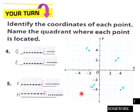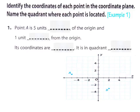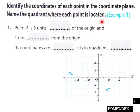Page one of your homework: identify the coordinates of each point and name the quadrant where each point is located — points G, E, F, and H. Page two of homework: identify the coordinates of each point in the coordinate plane and name the quadrant again, so fill in the blanks here, students.